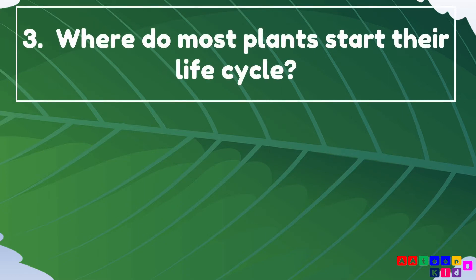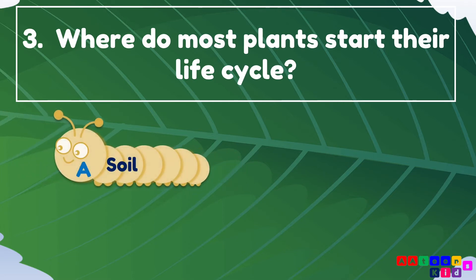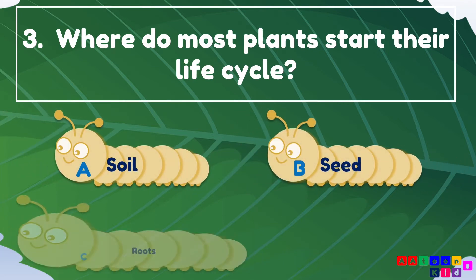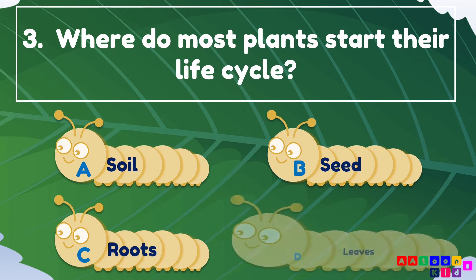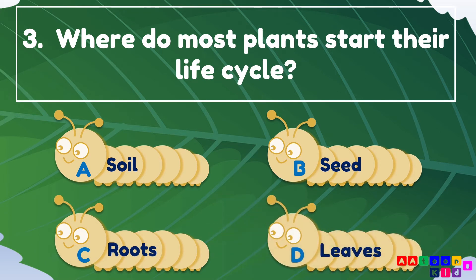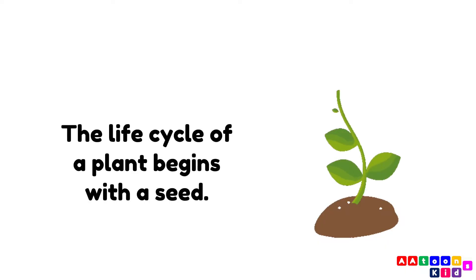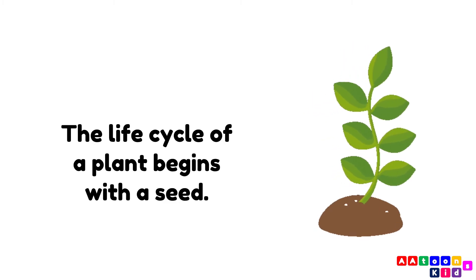Where do most plants start their life cycle? Soil, seed, roots, or leaves? The answer is seed. The life cycle of plants begins with a seed.